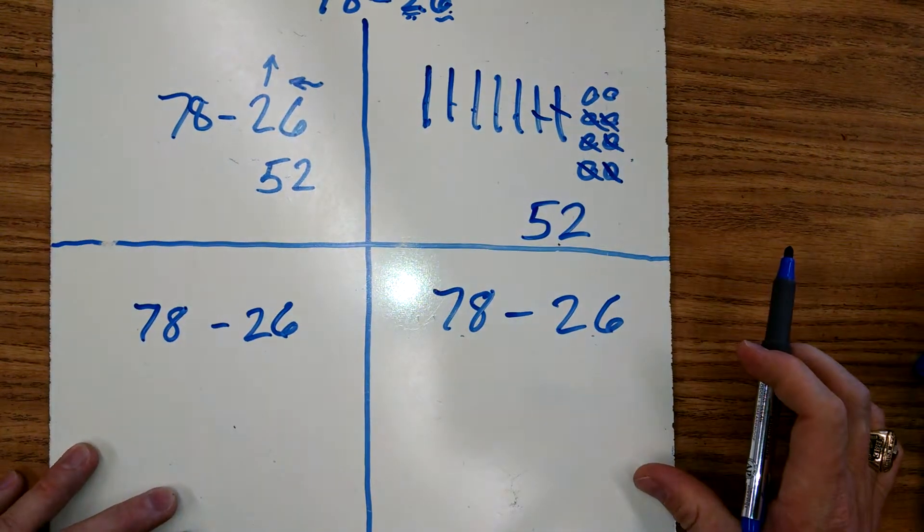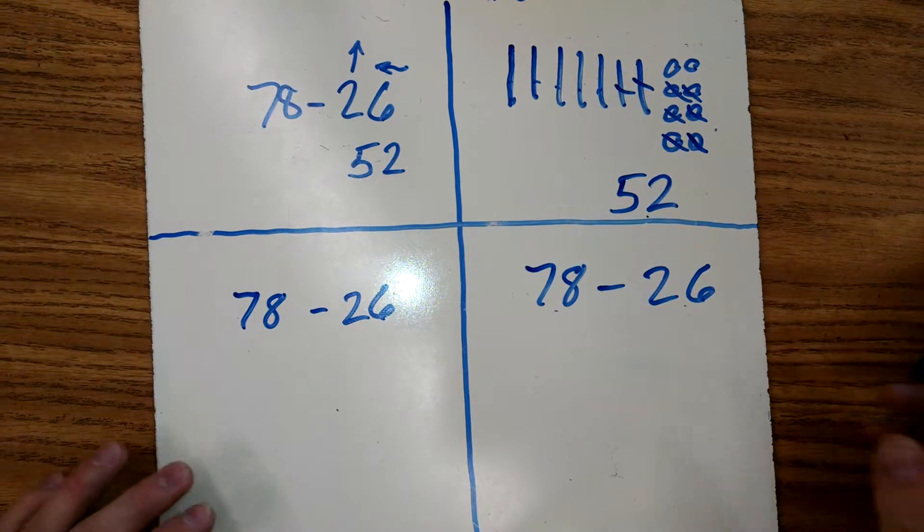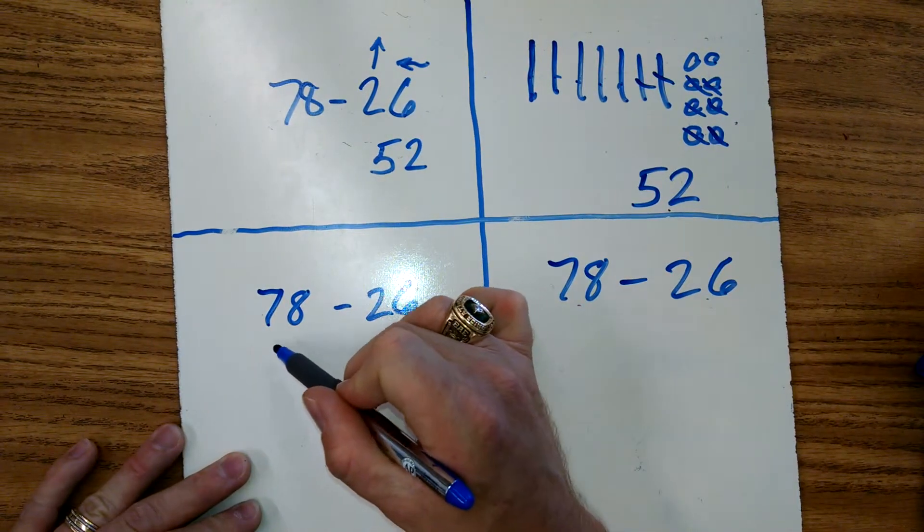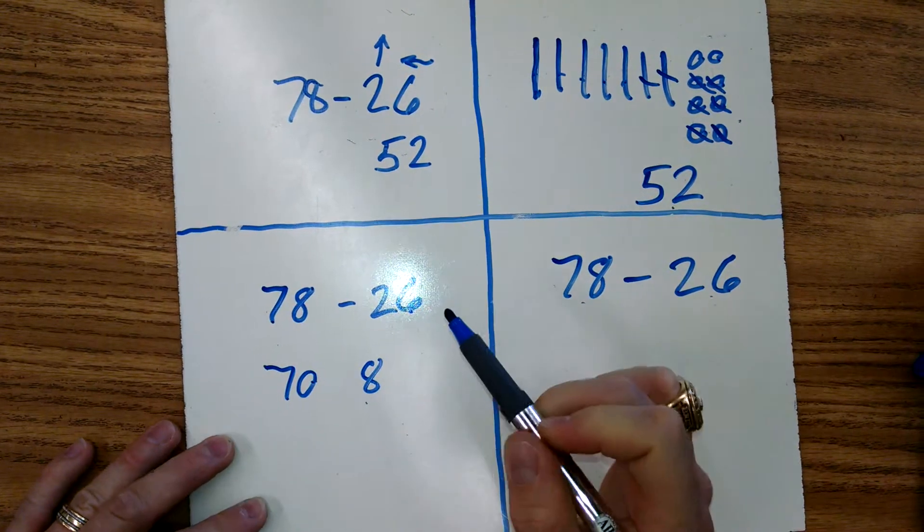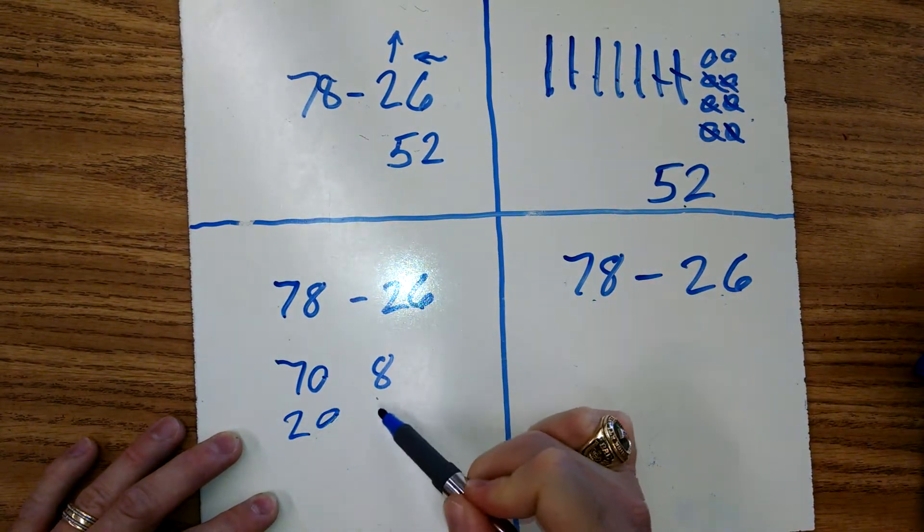And it's the same answer we got using our hundreds chart. The next strategy we're going to use is decomposing. So we're going to break apart by place value. Seventy-eight is seventy and eight. Twenty-six is twenty and six.